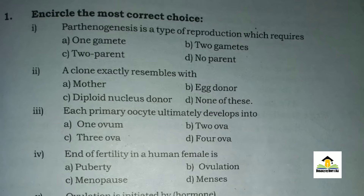The right answer for this MCQ is A: 1 ovum. MCQ number four: Infertility in a human female is — A: puberty, B: ovulation, C: menopause, D: menses. The right answer for this MCQ is C: menopause.